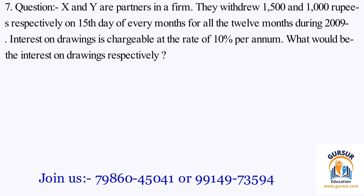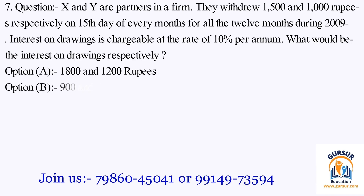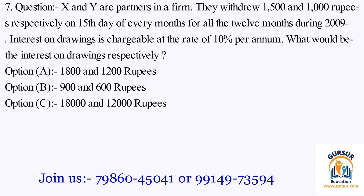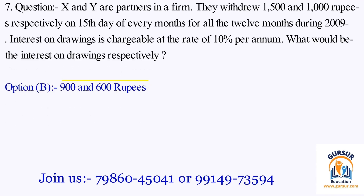Question number 7. X and Y are partners in a firm. They withdrew Rs. 1,500 and Rs. 1,000 respectively on the 15th day of every month for all 12 months during 2009. Interest on drawings is chargeable at the rate of 10% per annum. What would be the interest on drawings respectively? The option A is Rs. 1,800 and Rs. 1,200. The option B is Rs. 900 and Rs. 600. The option C is Rs. 18,000 and Rs. 12,000. The option D is Rs. 150 and Rs. 100. The right answer is Option B, that is Rs. 900 and Rs. 600.